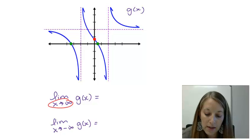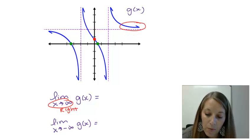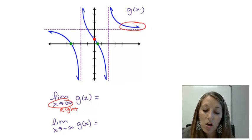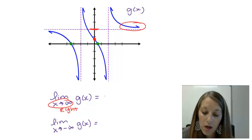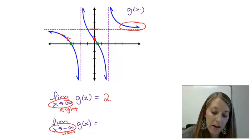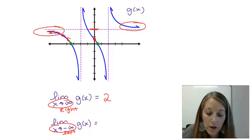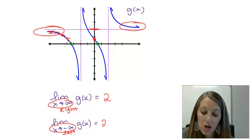For the first one, X approaching positive infinity means I want to look at the very right-hand side of my graph. Going farther and farther out, notice my graph ends up right near a horizontal asymptote. We know the graph has to get closer and closer to that horizontal asymptote, so it's going to plateau there. That Y value is positive 2, so the limit is positive 2. Moving on, X going to negative infinity means the very left-hand side of my graph. Tracing farther and farther out, it also approaches the horizontal asymptote, and that Y value is again positive 2. So my limit as X approaches negative infinity is also positive 2.